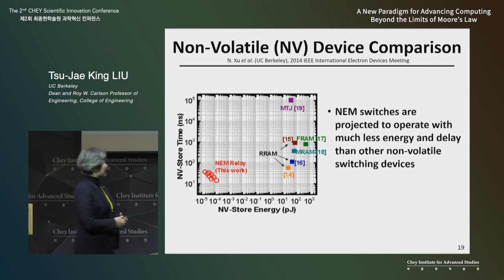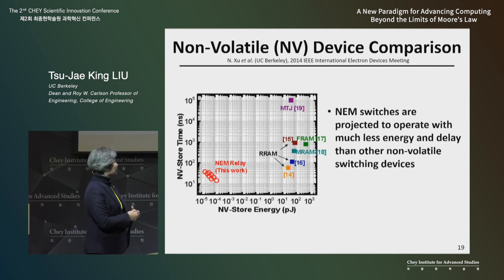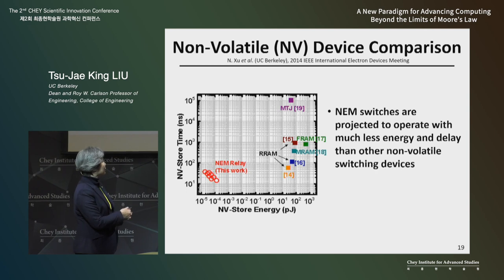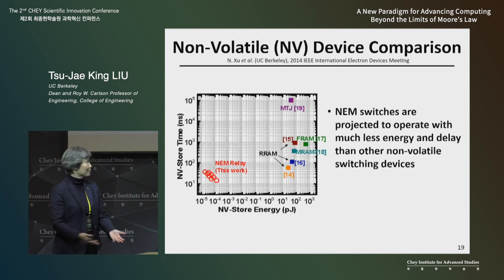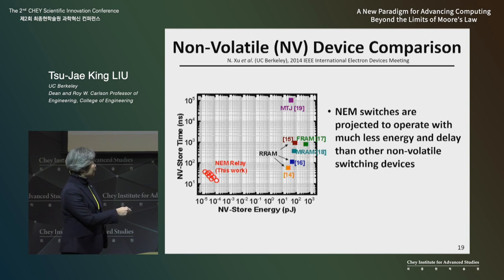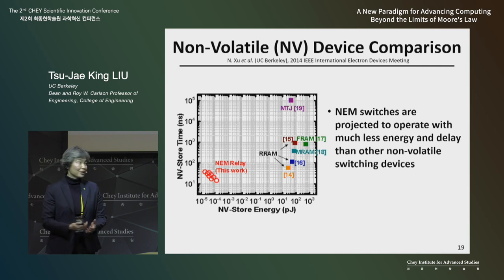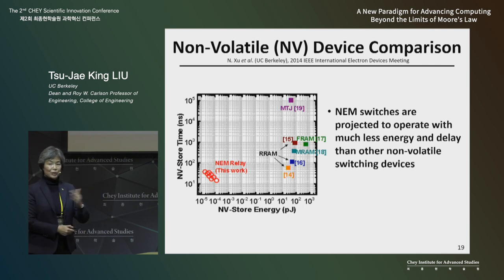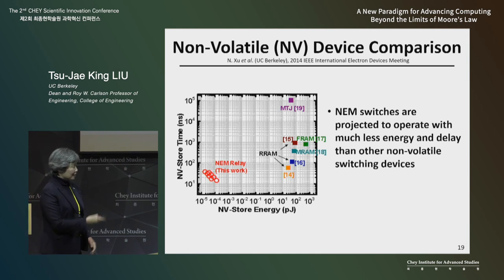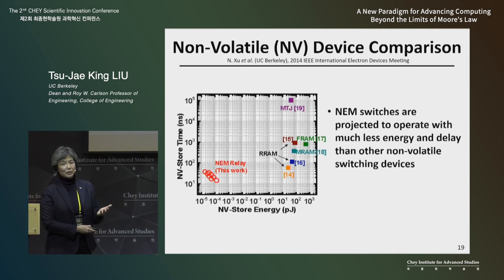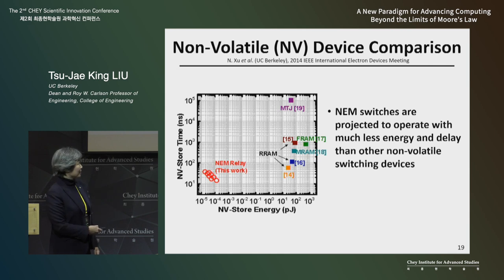One advantage of a mechanical switch: this plot shows the time it takes to program a non-volatile memory device, like a NAND memory device, as a function of energy. All of the non-volatile memory devices used in production today require much more energy to operate than a mechanical switch. Therefore, we think that mechanical switches would actually be best used for non-volatile memory applications.